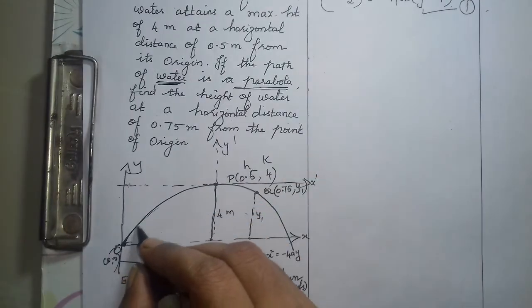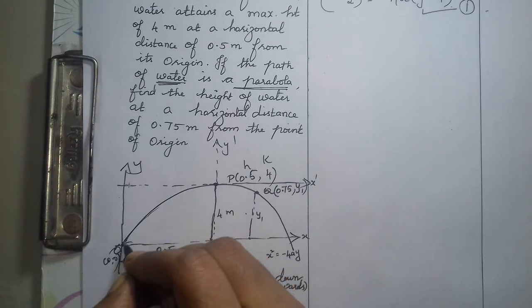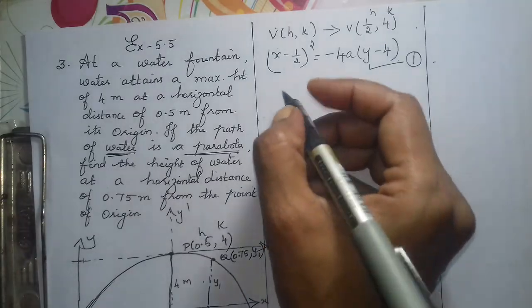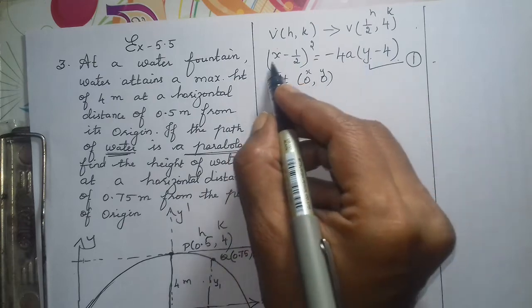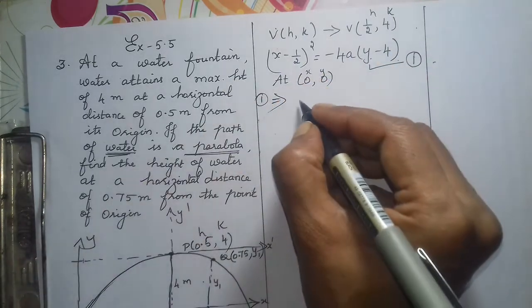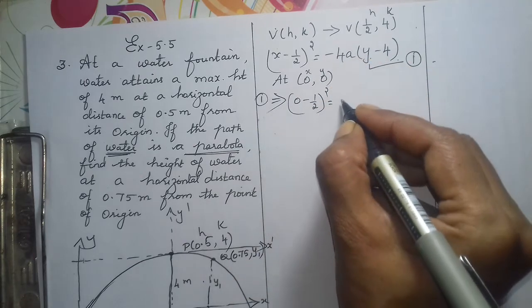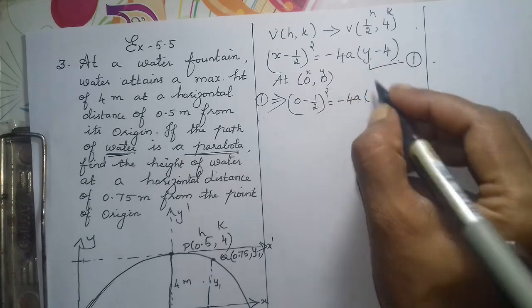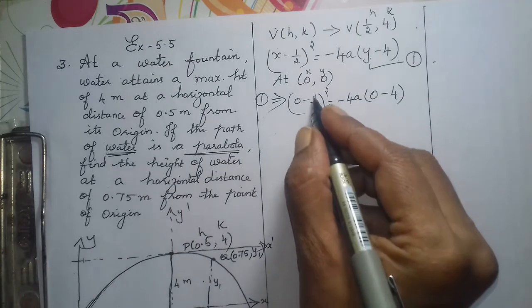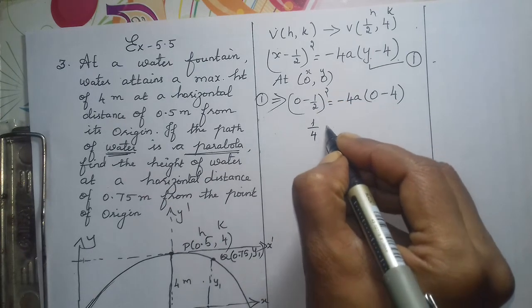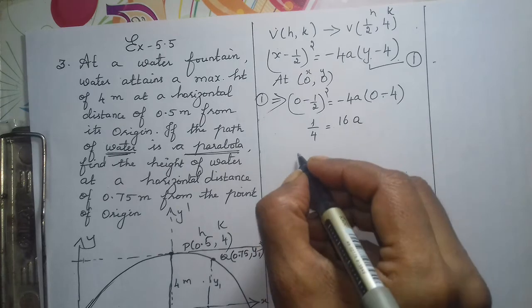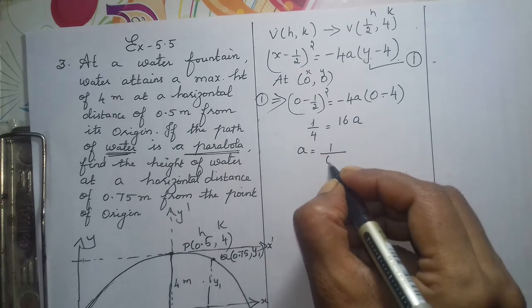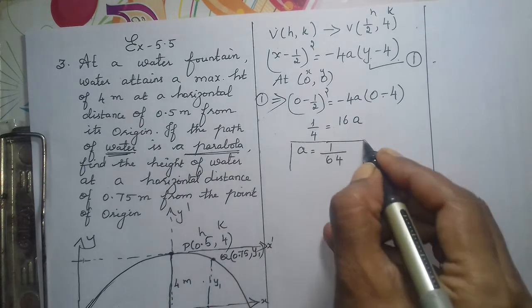Look at the diagram — this is the parabolic path. In the parabola curve, it also passes through the origin. Let us substitute — it passes through the origin at (0, 0). This is x and this is y. Substitute in place of x and y as (0, 0). Therefore, in equation 1: (0 − 1/2)² = −4a(0 − 4). That is (1/2)² = 1/4. Minus into minus is plus, so 4 × 4 = 16a. Bring 16 to the denominator: a = 1/4 × 1/16 = 1/64. Therefore the value of a is 1/64.